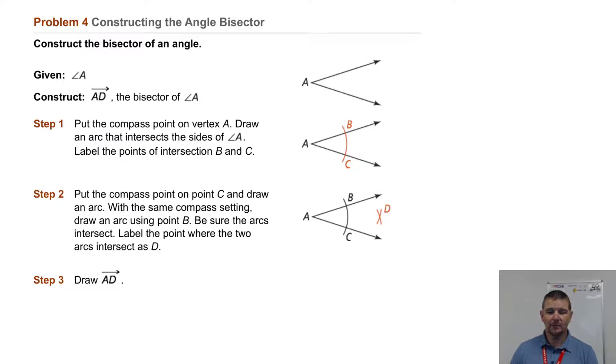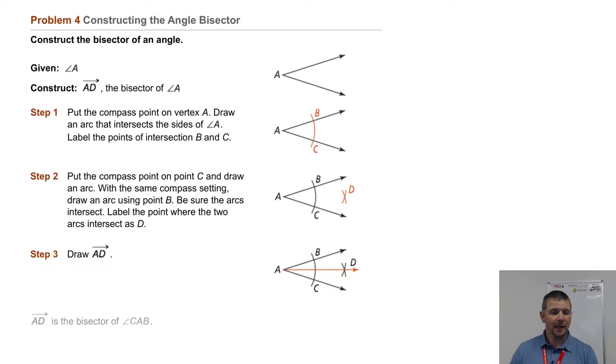Step 3: Using point D as a target point, draw ray AD. Ray AD is the bisector of angle CAB.